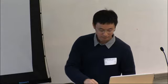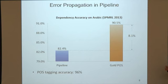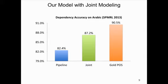Looking at another example on Arabic dependency parsing: on this dataset, the POS tagging accuracy is about 96%. However, there's up to an 8% parsing performance difference between using gold information and using a pipeline model with predicted information. The green bar shows the results of our joint modeling method on the same Arabic dataset — we improved the parsing accuracy to 87%, which cuts the performance gap by more than 50%.